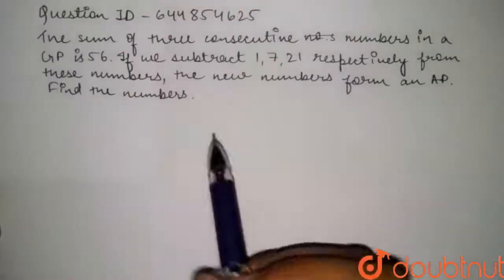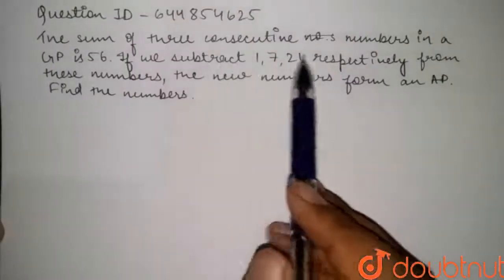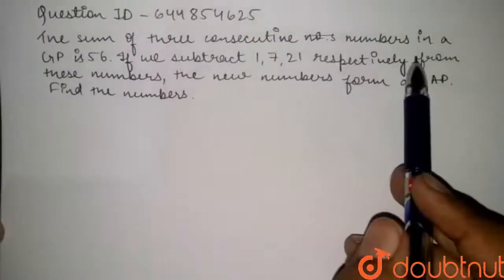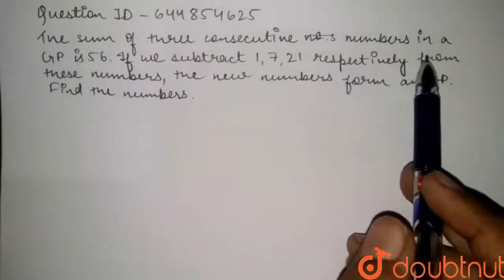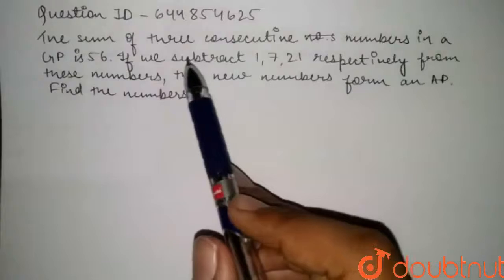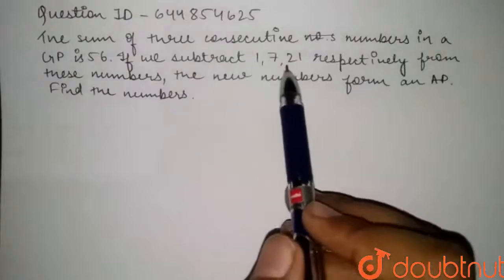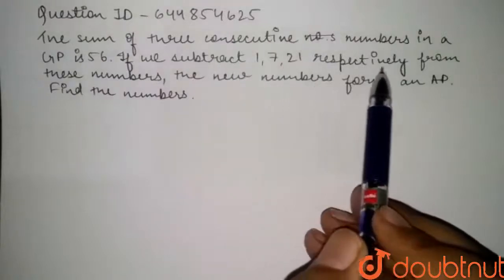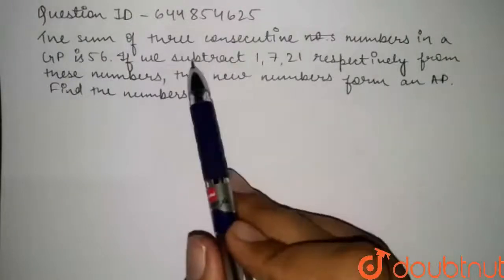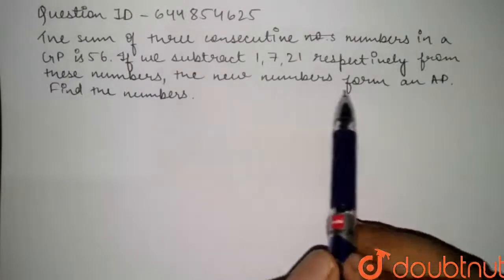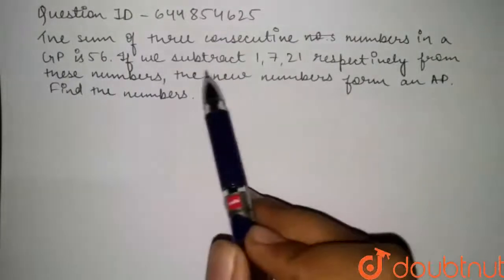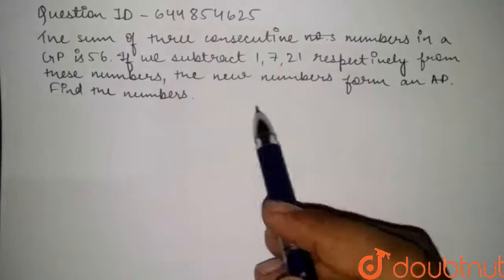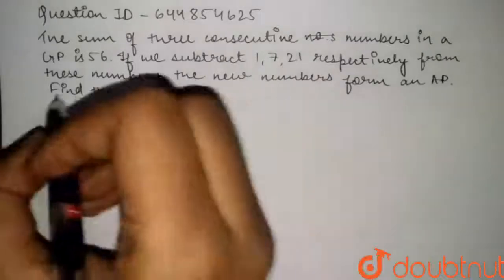In the given question, the sum of three consecutive numbers in a GP is 56. If we subtract 1, 7, and 21 respectively from these numbers, the new numbers form an AP. We have to find the numbers.